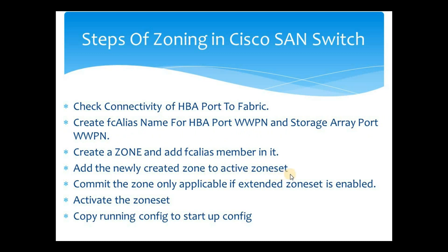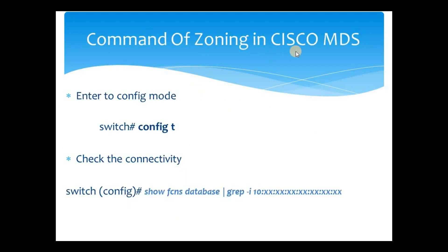Next, we add the newly created zone to the active zone set and then commit the zone. This step is only applicable if extended zone set is enabled; if not, you can skip it. Then we activate the zone set — usually the zone set will already be in active state, but whenever we make changes in a fabric we have to activate the zone set again. Finally, we copy running config to startup config. This command copies all running configuration to startup config so that whenever a switch reboots, it takes information from startup config. Missing this step means you may lose zoning information after a reboot.